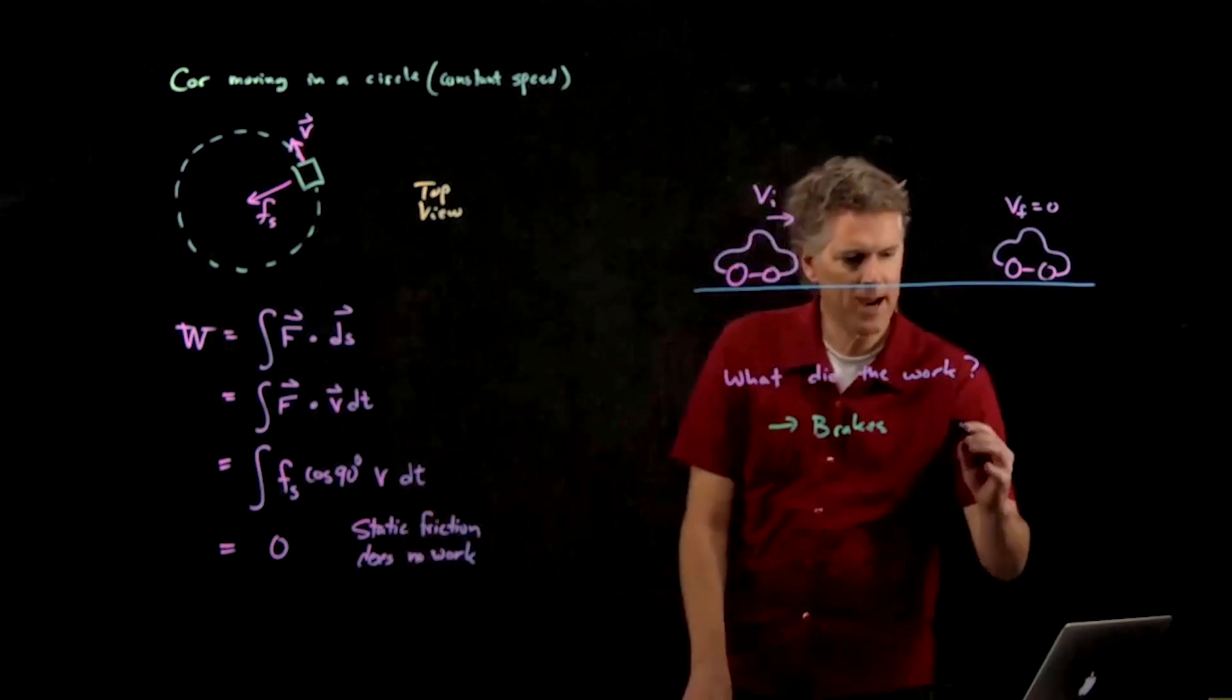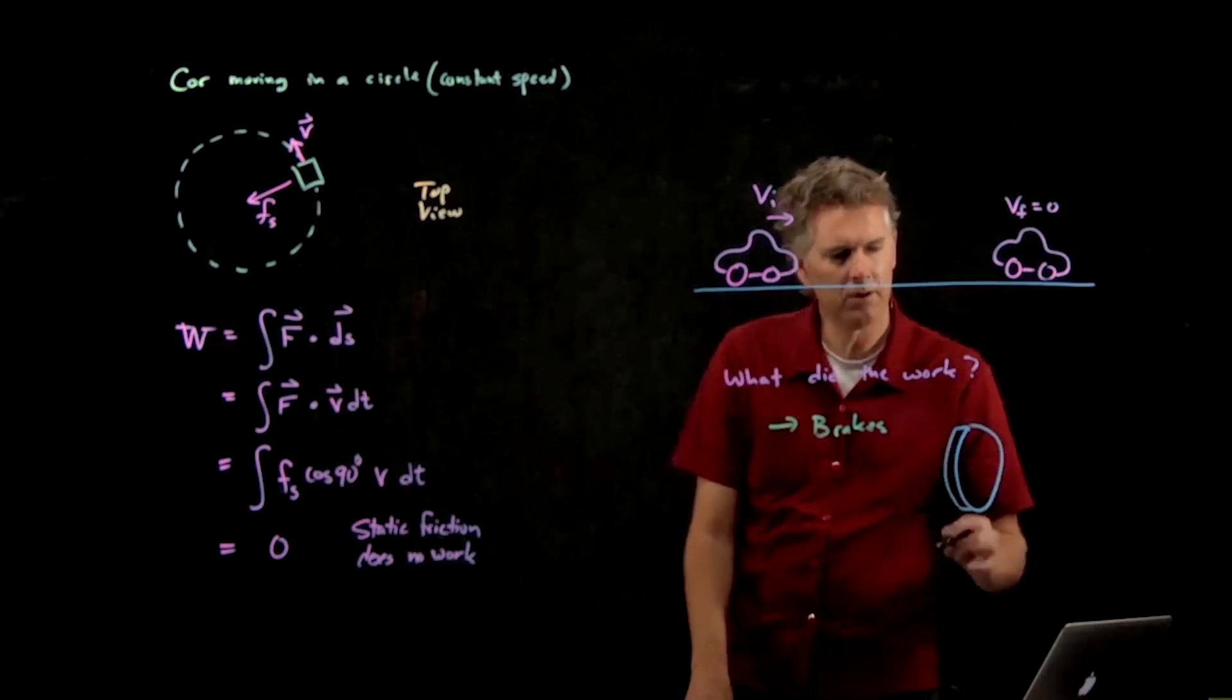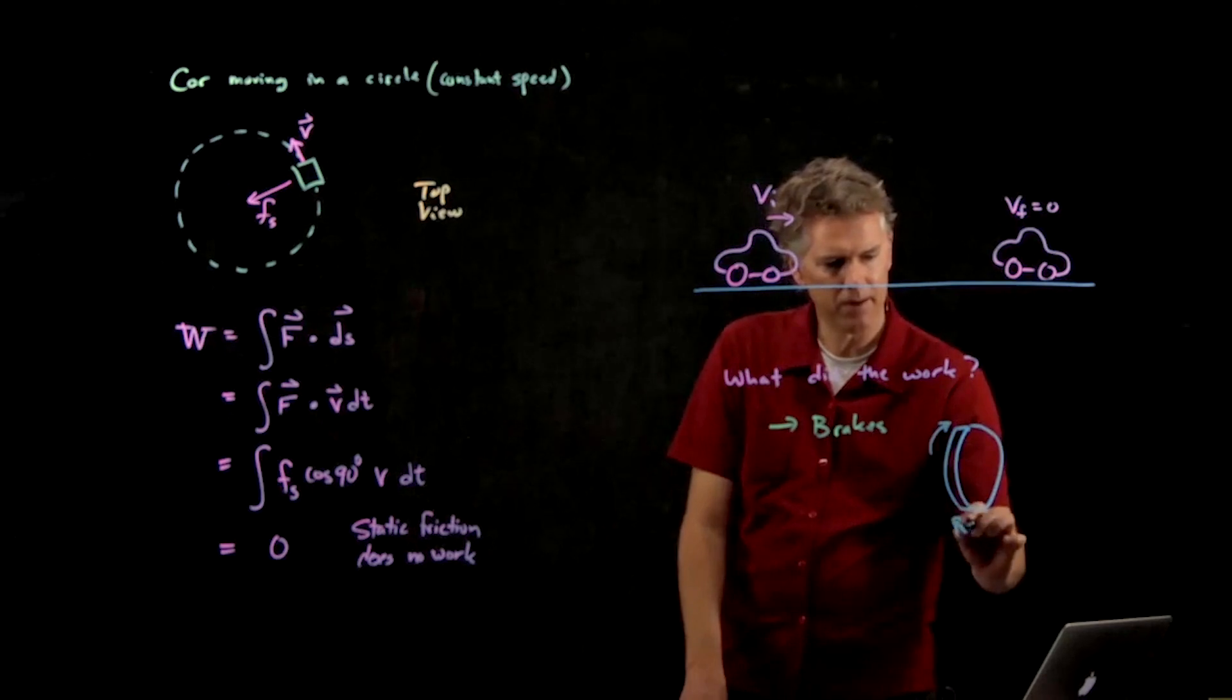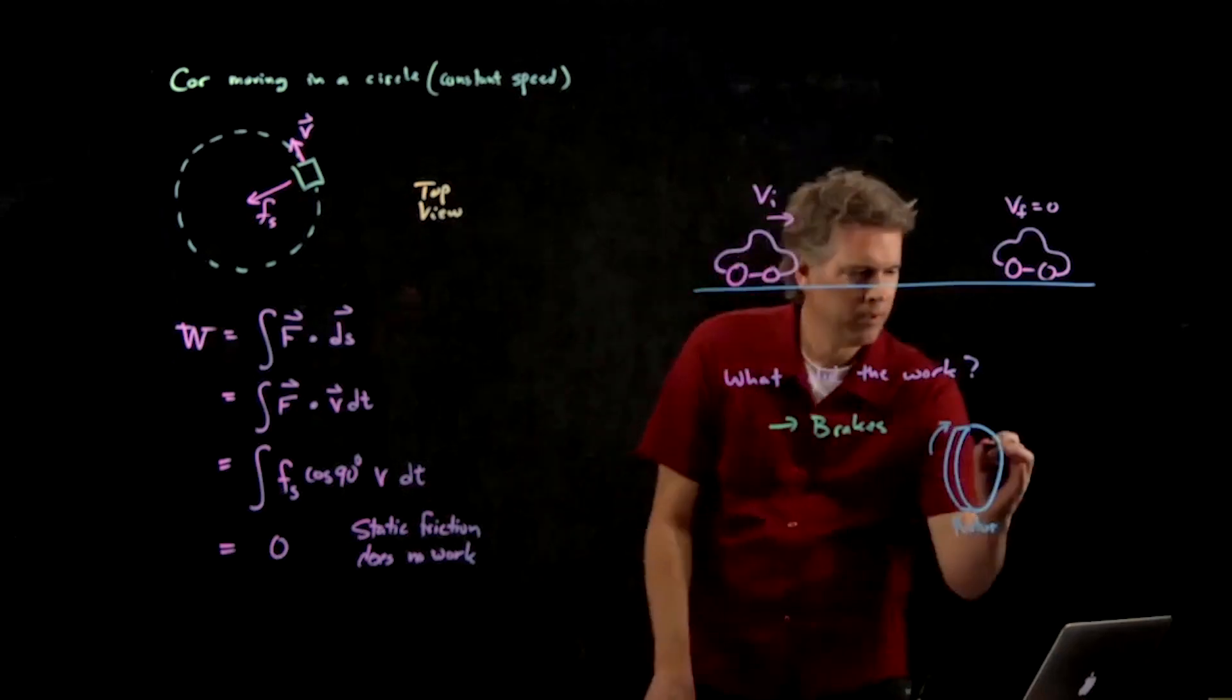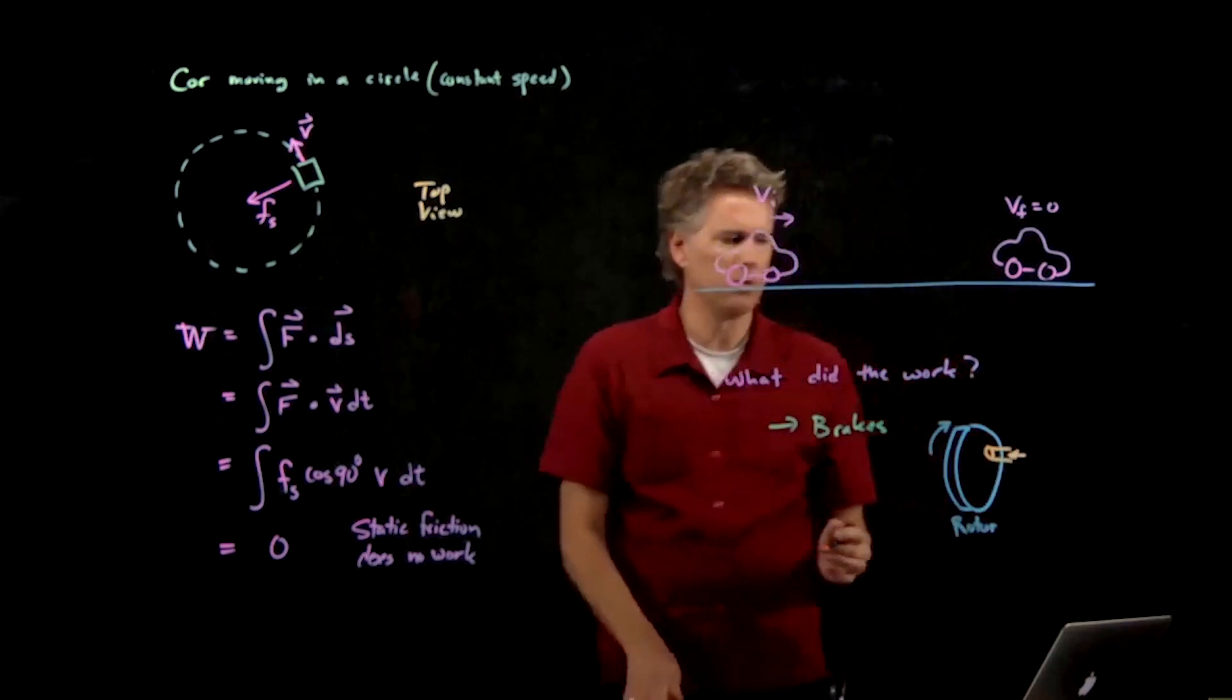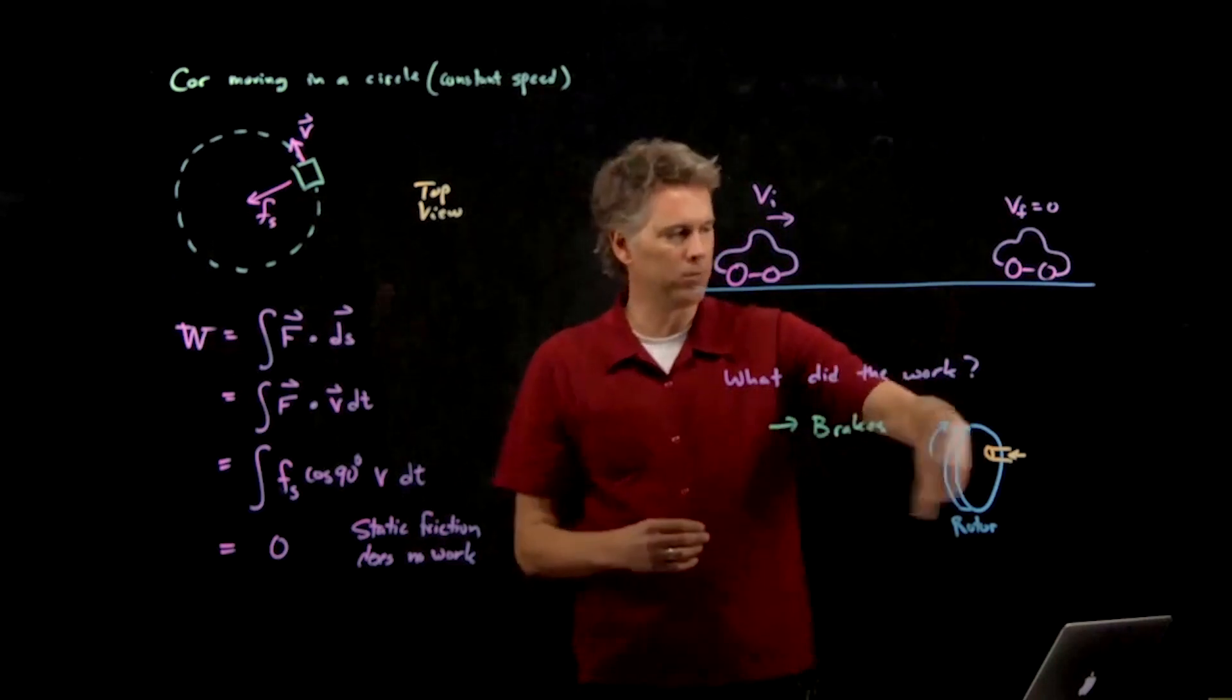So the brakes in your car look like this. There is this big metal cylinder called a rotor and this rotor is attached to your wheel and it's spinning around, and then you have these pistons that push onto the rotor and that's where your brake pads are on the ends of those pistons.